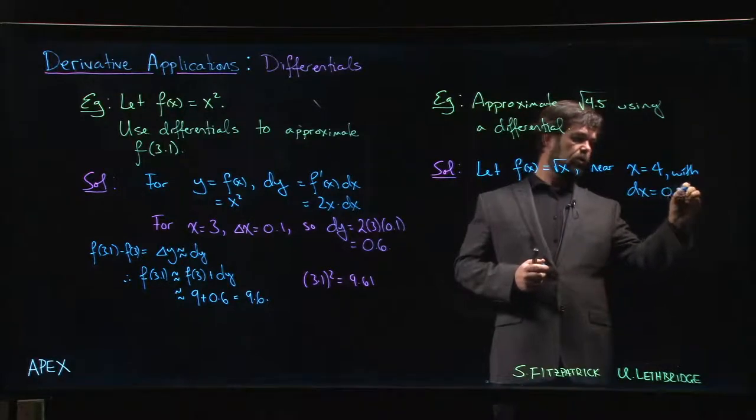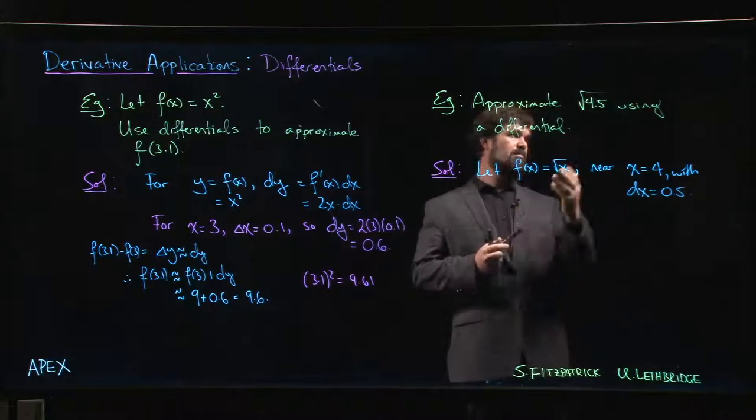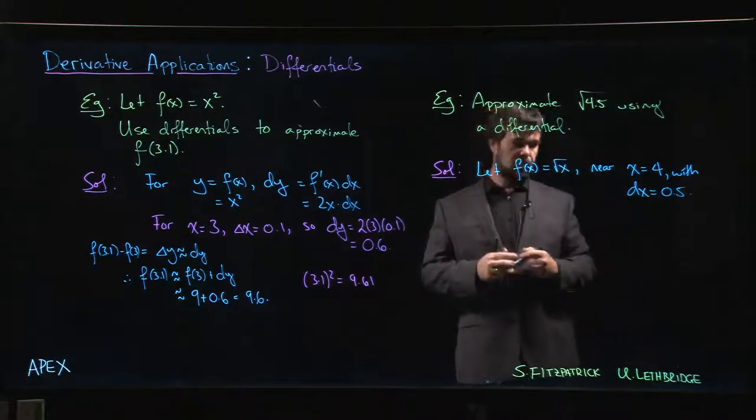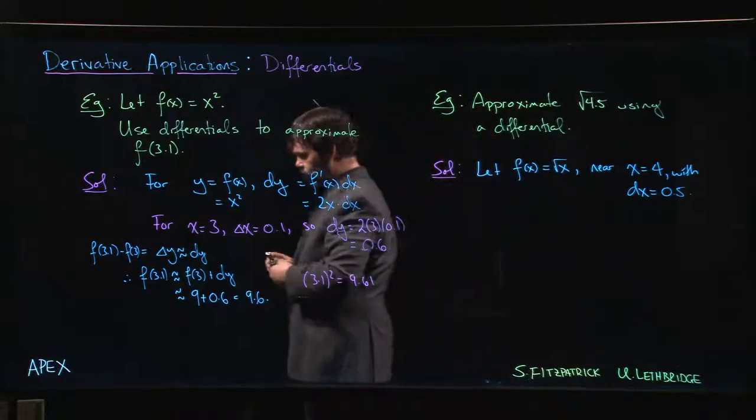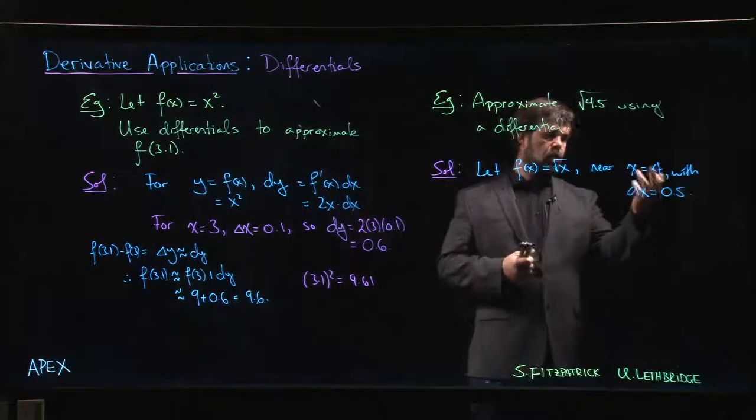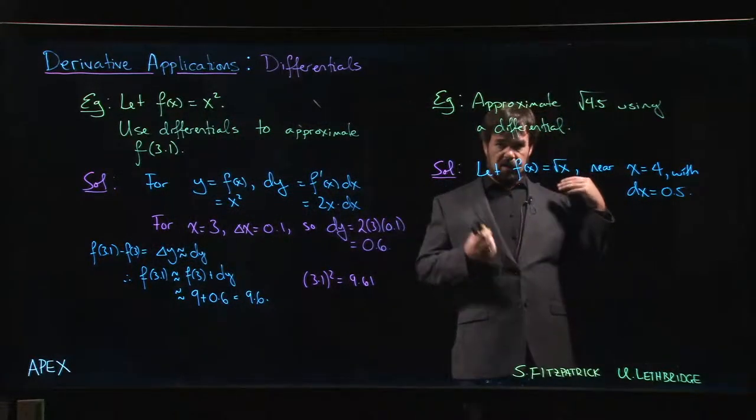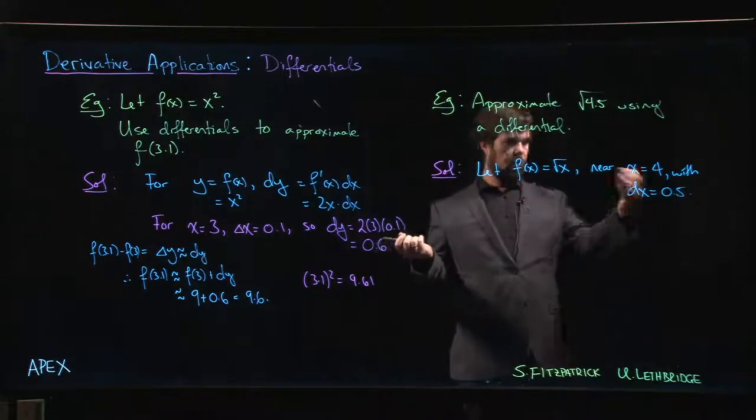Why 4? Well, because we know what the square root of 4 is. Maybe 0.5 is kind of big for some situations, but that's all right. We know the square root of 4. What's the next closest perfect square? I'm not sure.